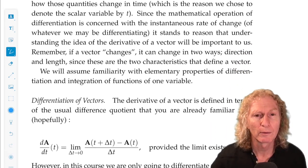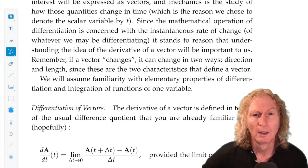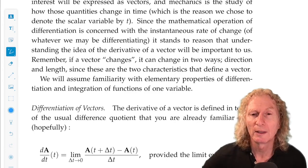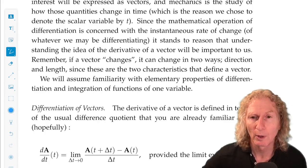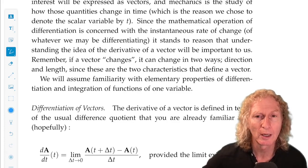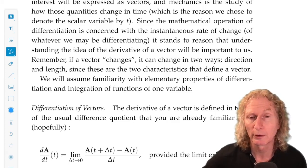Now, we're going to first consider these vectors expressed in the i, j, k coordinate system, the Cartesian coordinate system. So i, j, and k are unit vectors that do not change in time their length or direction.